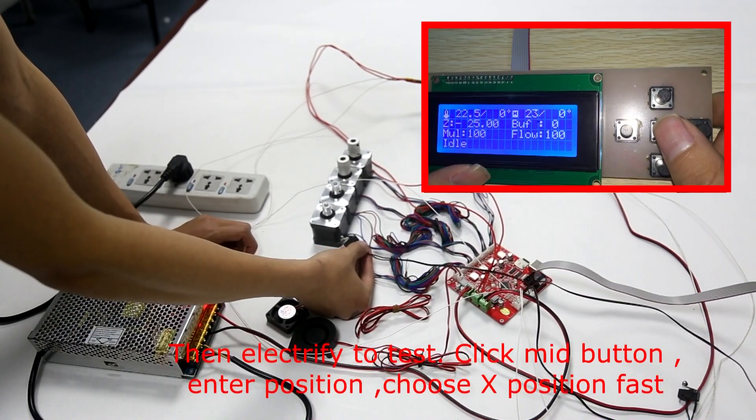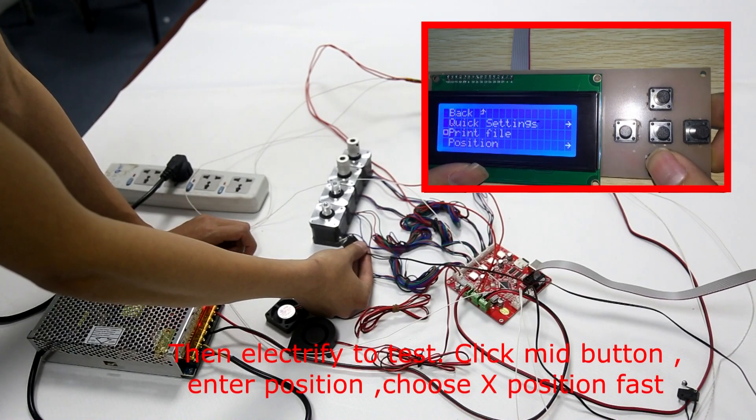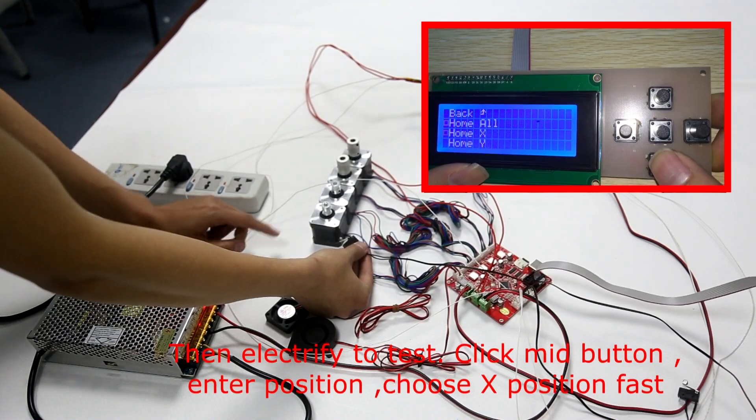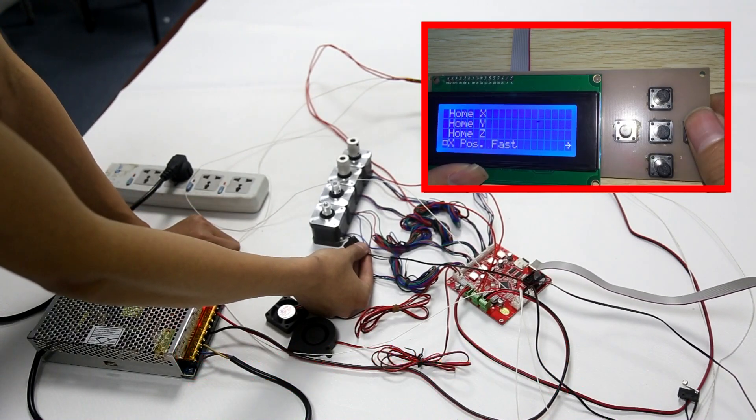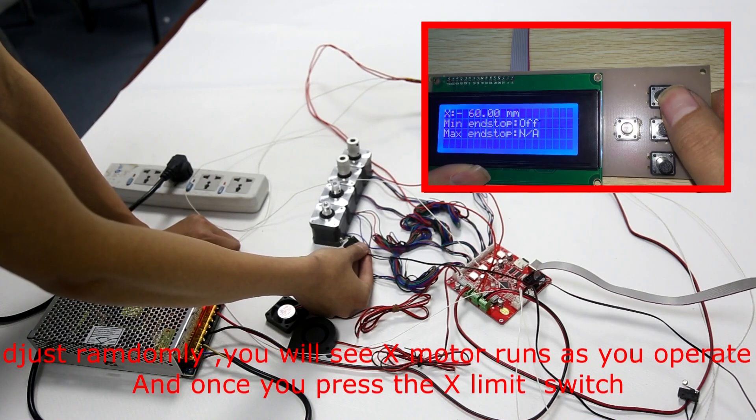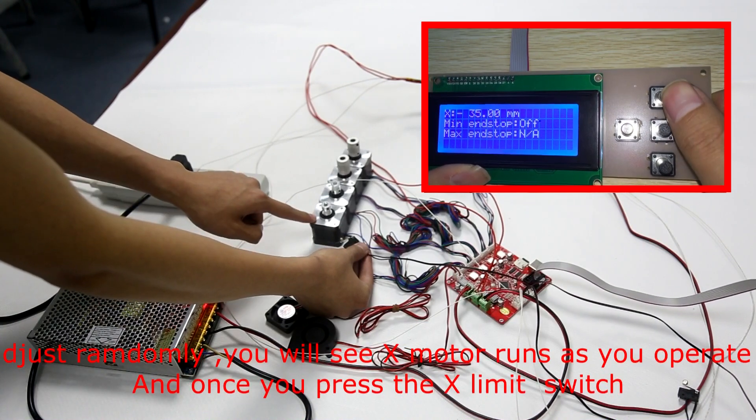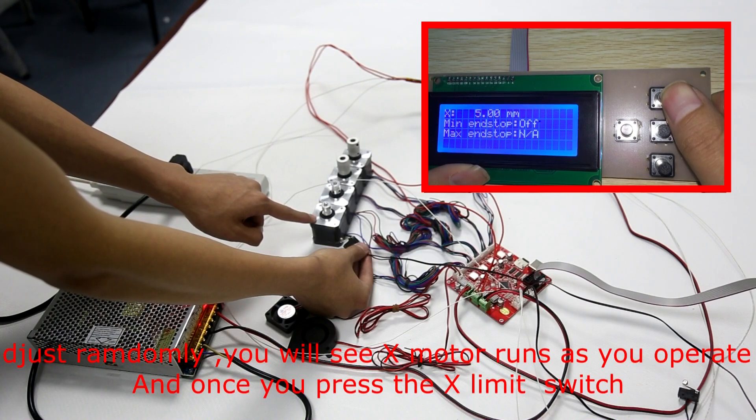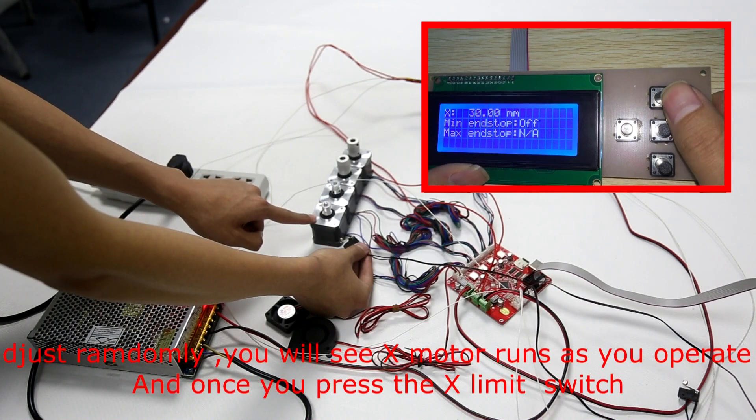Then, electrify to test. Click the menu button, enter position. Choose X position. Adjust randomly. You will see the X motor runs as you operate. And once you press the X limit switch, it stops.